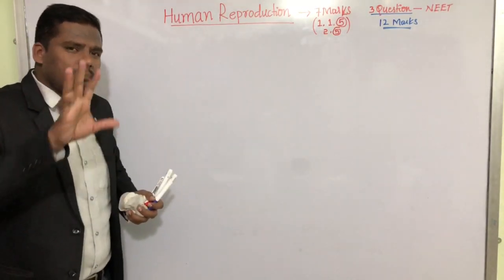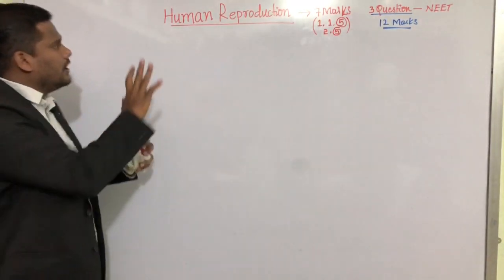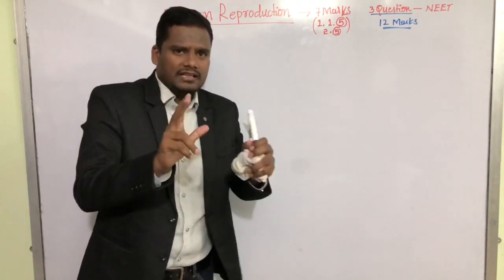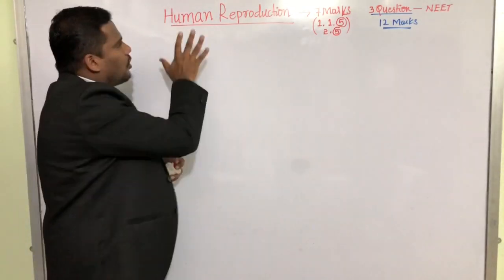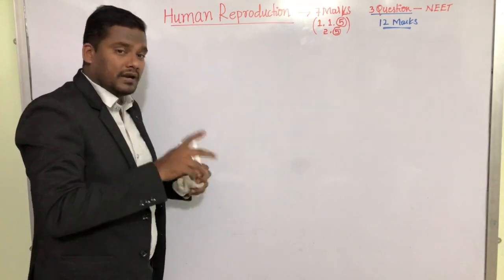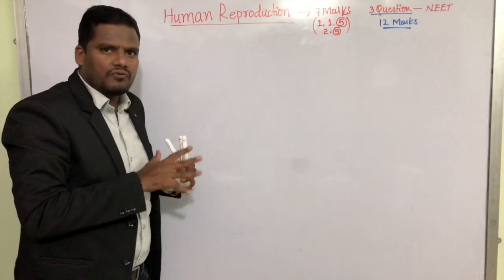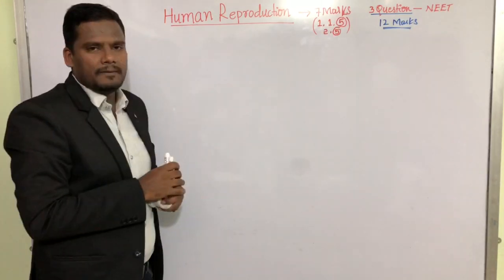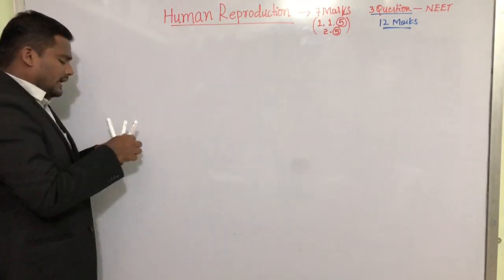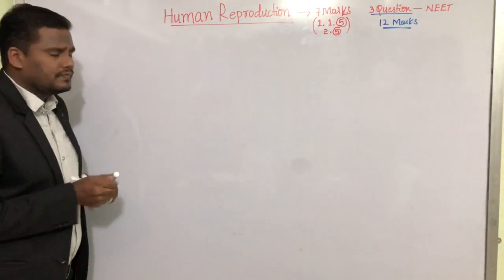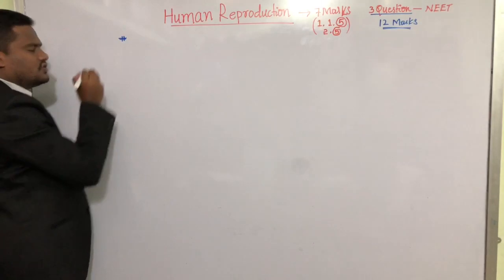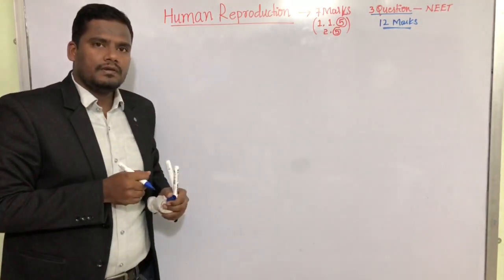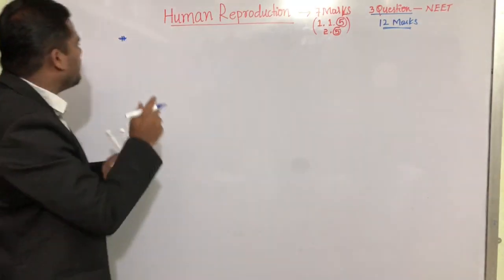Before we begin Human Reproduction, in this particular video we are going to discuss the basic things of human reproduction. As we know, human beings are the most complicated living organisms on the surface of the earth, hence the reproduction process is also very complicated. But we will study all these complicated processes in a simplified way to understand the entire concept.